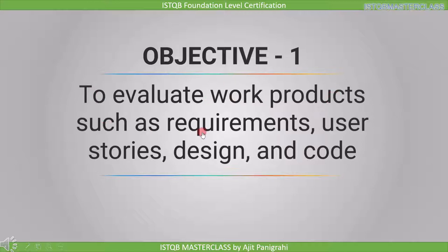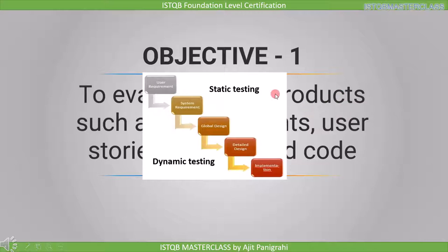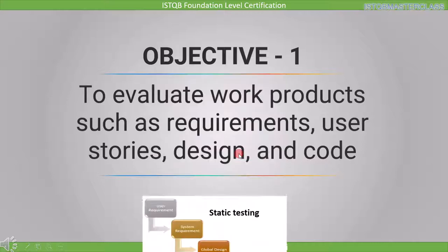The first objective is to evaluate work products such as requirements, user stories, design, and code. Work product means output — these are the different stages of the software development lifecycle. When we are in the requirement stage the output is the requirement, in the design stage the output is the design document, and in the implementation stage the output is code. We have to evaluate all these outputs.